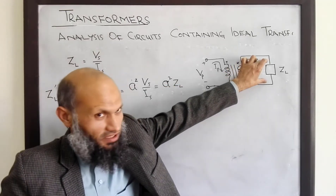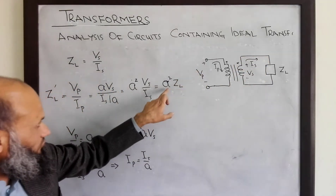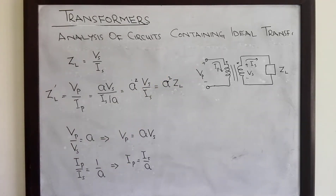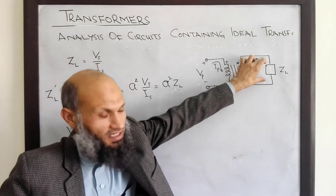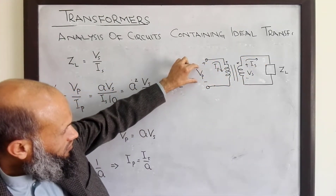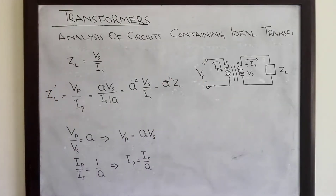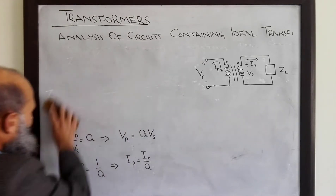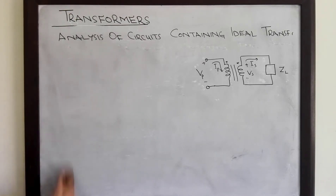If an impedance ZL is connected on the secondary side, it will appear as if an impedance of A squared·ZL is connected to the primary voltage source. With this knowledge, the procedure to analyze electrical circuits containing ideal transformers becomes quite easier.